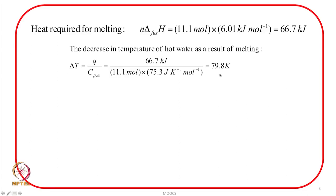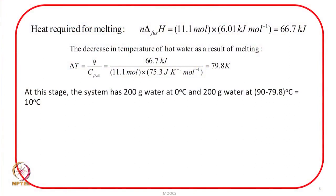The change in temperature is 80 — it does not matter whether counted in Celsius or Kelvin since the delta remains the same. The initial temperature of the water was 90 degree Celsius and the change is 80 degree, so the final temperature is 90 minus 80 equals 10 degree Celsius. Up to this point the ice has melted and the water has fallen from 90 to 10 degree Celsius.